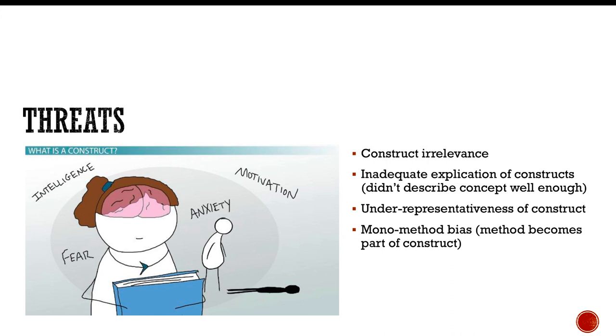Another threat is mono method bias. So mono method means you have one method of assessing the construct and in which case the method becomes part of the construct. So if you're using paper and pencil exams, that is one method to assess statistical understanding. And what tends to happen is some people are just good pen and pencil test takers or pen and paper or pencil and paper, whatever. They're just good test takers. And so their scores, which should reflect their statistical understanding, they get a little edge, they get a little bump in their statistical construct score because they're just good at taking tests. Well, that difference isn't due to statistical knowledge. It's due to some unrelated constructs. So that's a mono method bias, which also is a form of construct irrelevance.